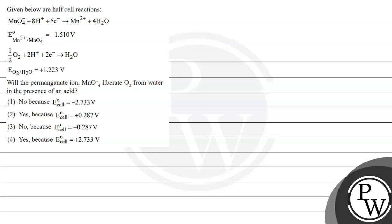Hello, let's read this question. Given below are half-cell reactions, so these are the reactions given to us and respective electrode potential is also given. Will the permanganate ion MnO4- liberate O2 from water in the presence of an acid? And these are the following options given to us.